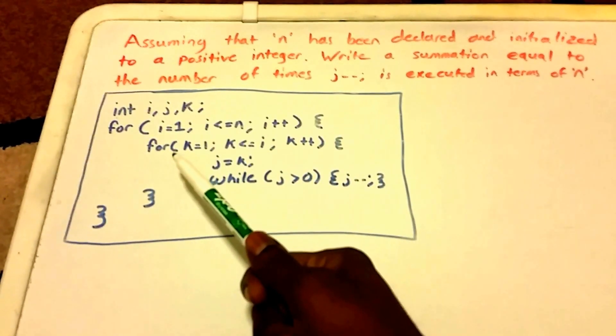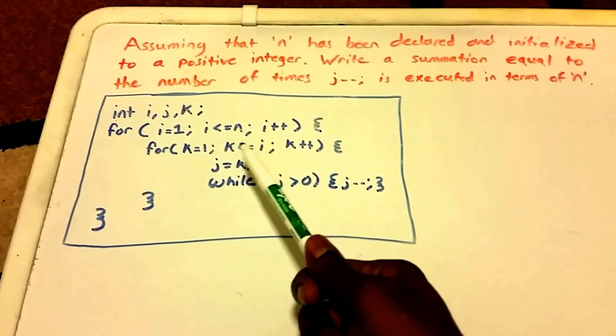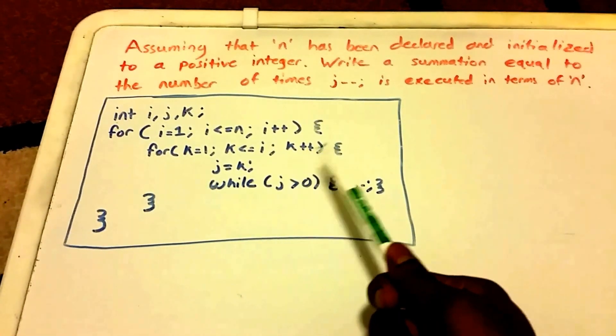Next inside of that loop is another for loop, and it runs from k equals one, and it's going to run while k is less than or equal to i, and it's going to increment by one each time. So we get our k plus plus.